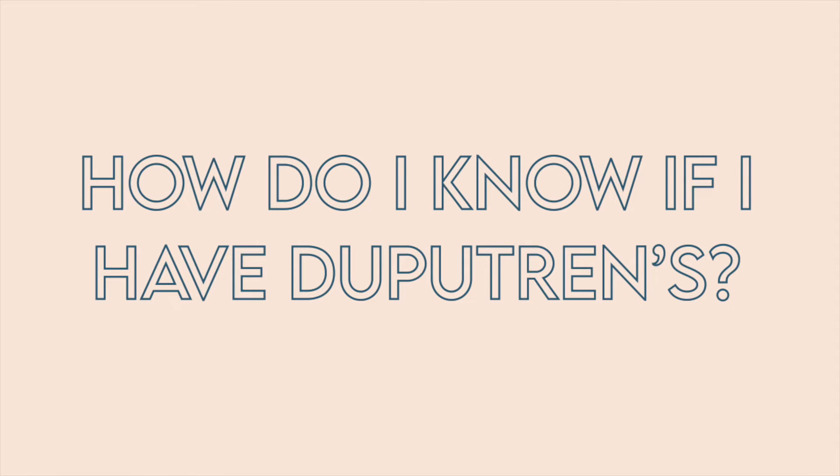So what causes Dupuytren's disease? Unfortunately, the cause is not known. It is also known as Viking's disease and tends to be more prevalent in people of Scandinavian descent, though it can happen in any ethnicity or race. It is more prevalent in men, in people over the age of 50, and in people who smoke. There are other risk factors and more research coming out all the time, but unfortunately there's no single identified cause yet.